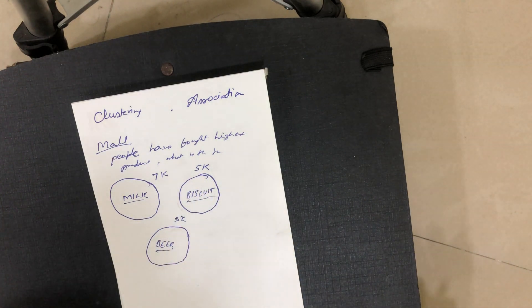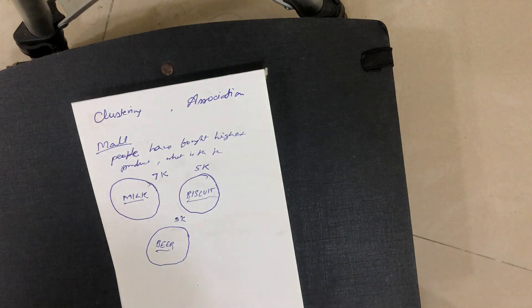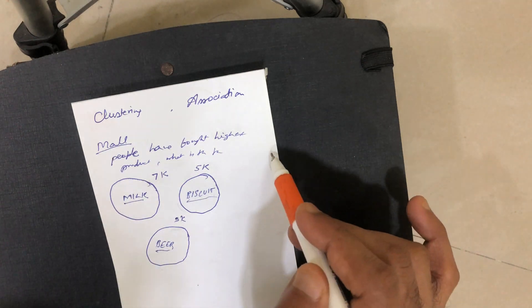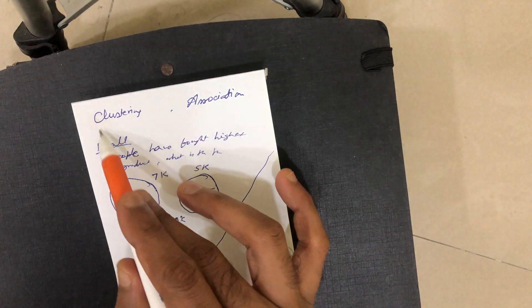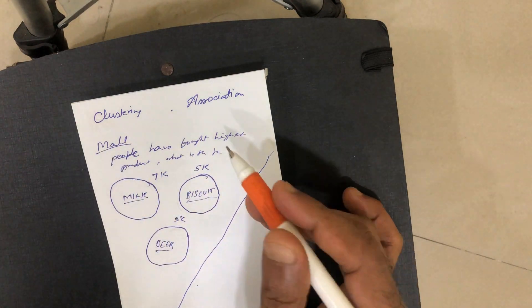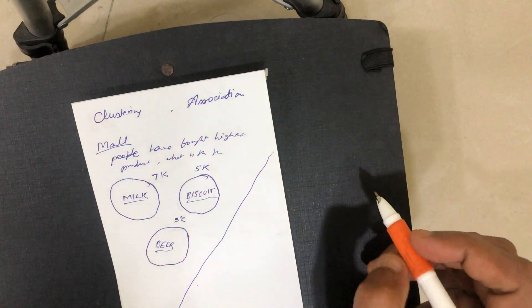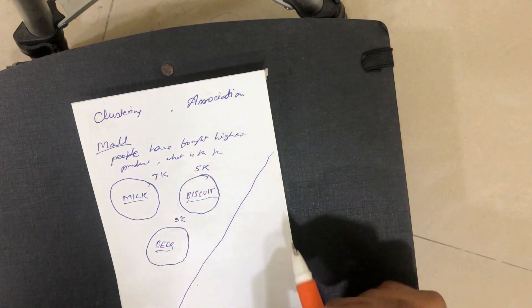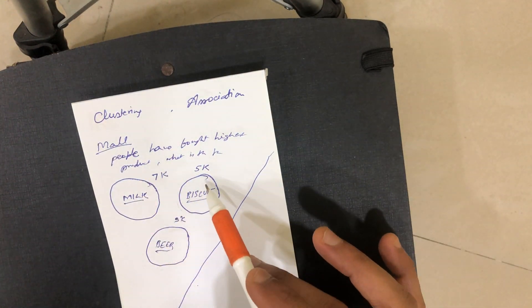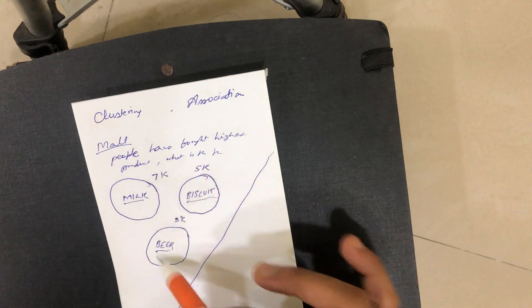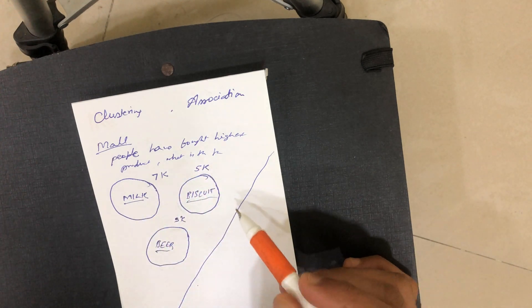Now let's understand what association is. Association is a bit more advanced than clustering. What association does is find out a relation among the clusters.